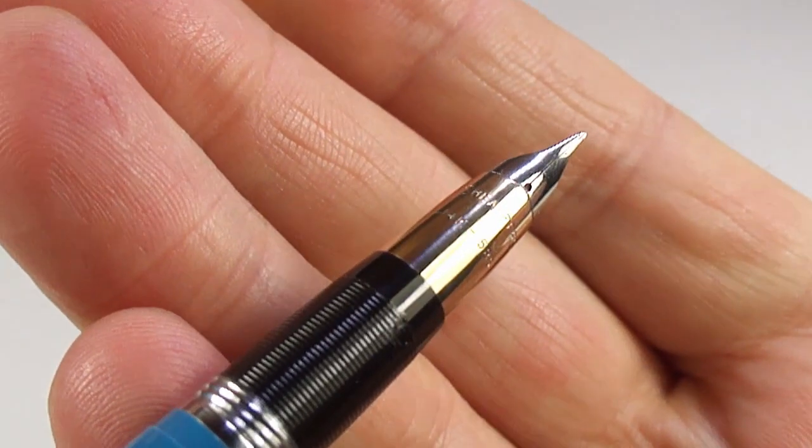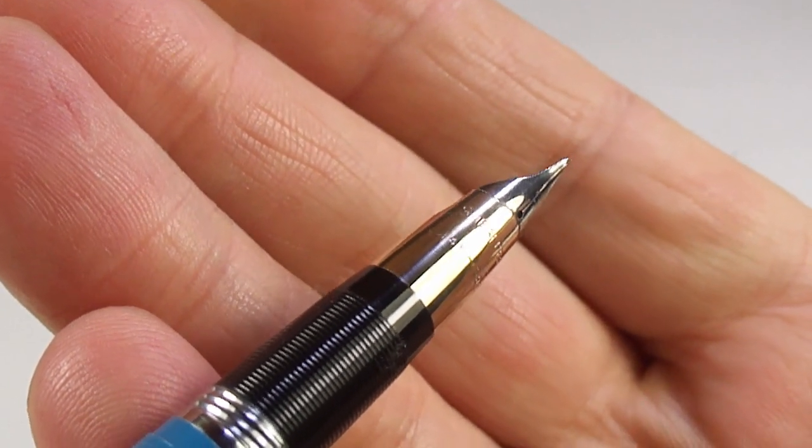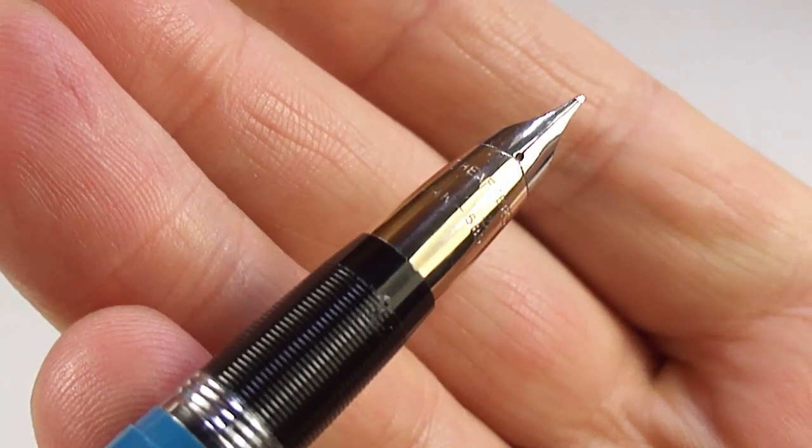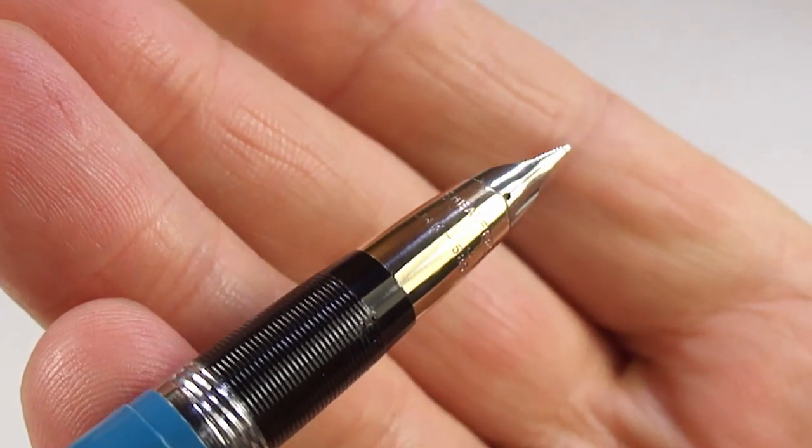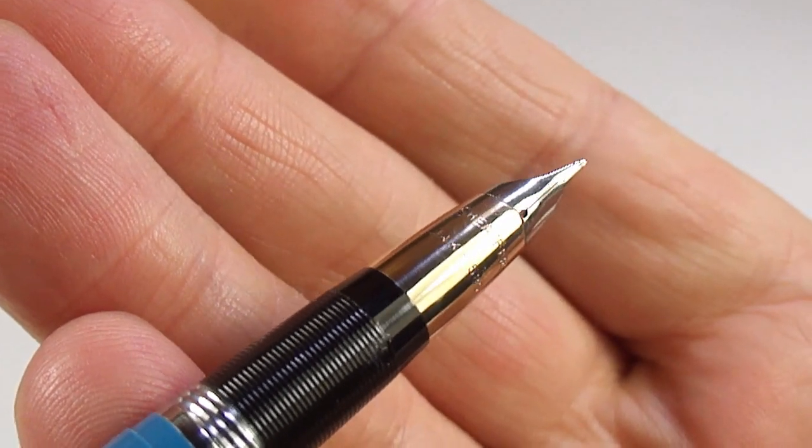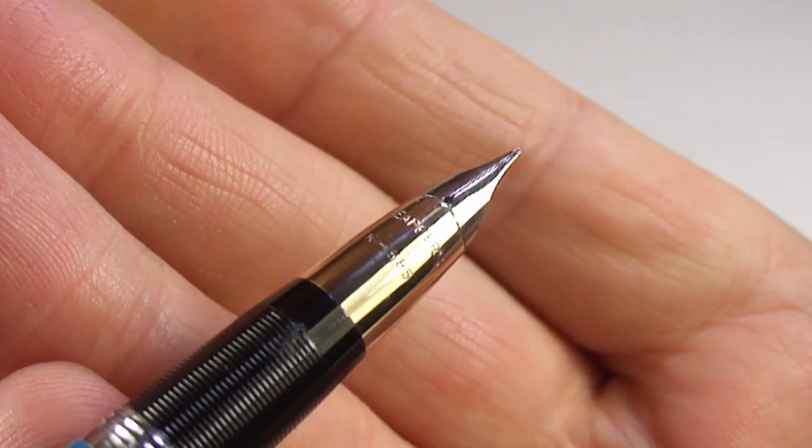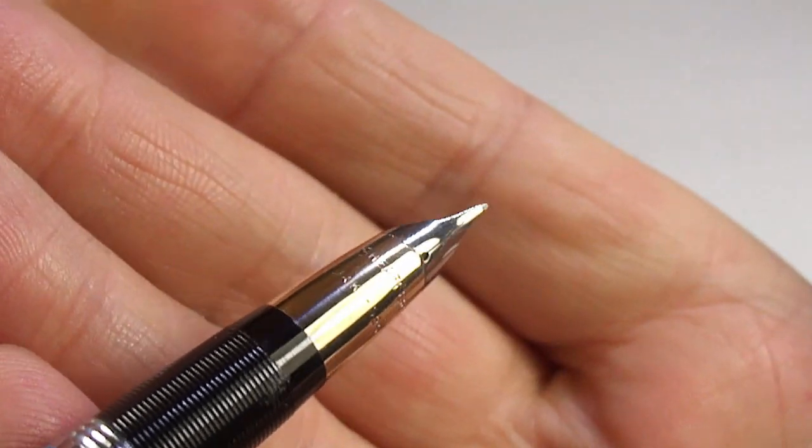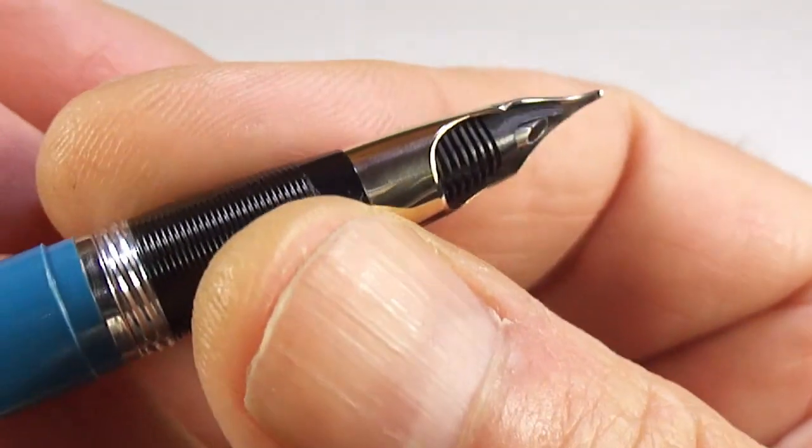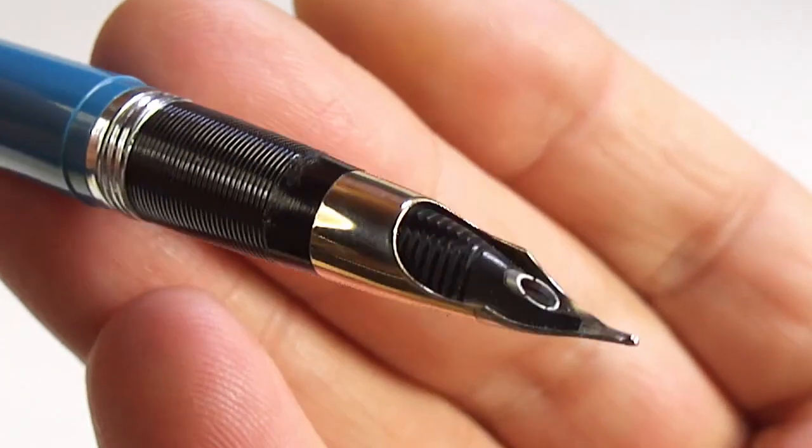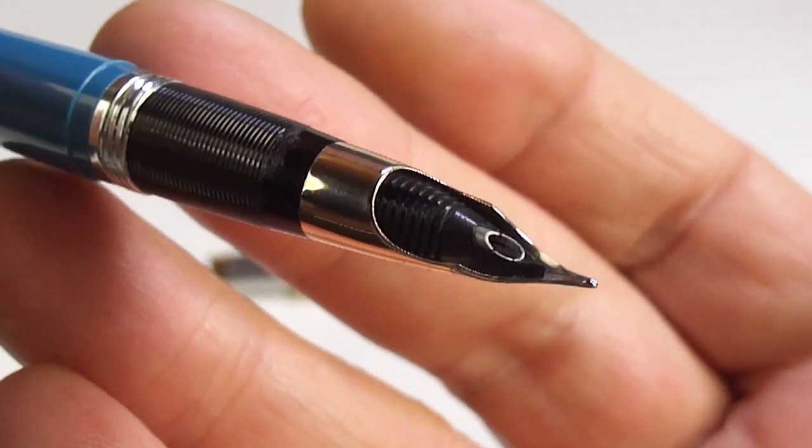Let's just keep it nice and still for you. And the nib reads 14 carat 585. And it also has, obviously, Schaefer to the top there. This is actually what we term as a two-tone nib. It's a 14 carat gold nib. And to the top there, it has what we term as a platinum mask. So, a lovely two-tone Triumph nib. There's a lovely view of the side. Let's show you underneath there. You can see the feed. You can see the snorkel tube just inside the feed there as well.